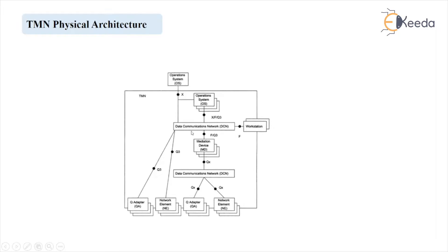But there is one addition of a block due to which Functional Architecture is converted or named as Physical Architecture, and the answer is Data Communication Network Block. Due to such kind of arrangement and use of the multiple blocks again and again, the architecture is turned into Physical Architecture. Here, the name of the interfaces and the representation of the interface with different letters is again different. So we have to study this as a new architecture of TMN known as the Physical Architecture.